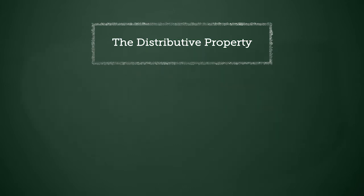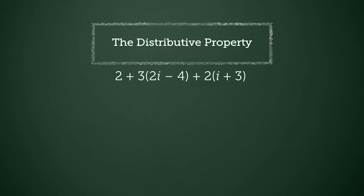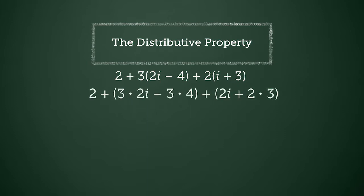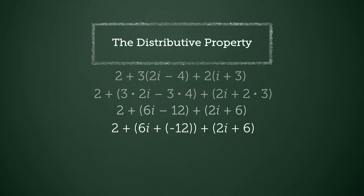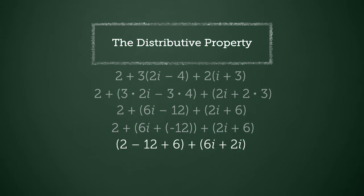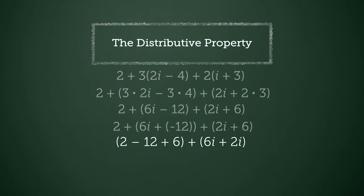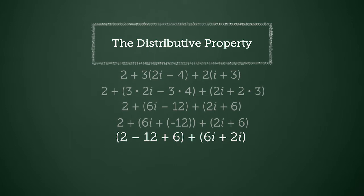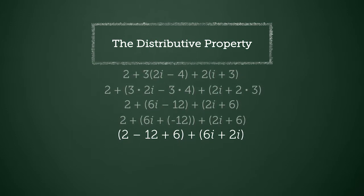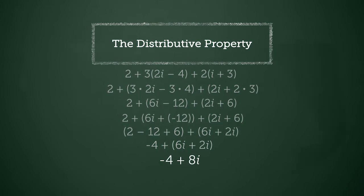You may ask yourself why you should use the distributive property. Many problems are a bit more complicated, and sometimes terms within parentheses are not like terms. This expression can be simplified, but there is nowhere to begin without distribution. First, you must distribute the 3 and the 2. Now that you have all addends, keeping in mind that negative 12 is the same as adding negative 12, you know the order can be rearranged using the commutative property of addition, and grouping does not matter because of the associative property of addition. Change the order and groupings to put like terms together, then add the like terms to simplify the expression.